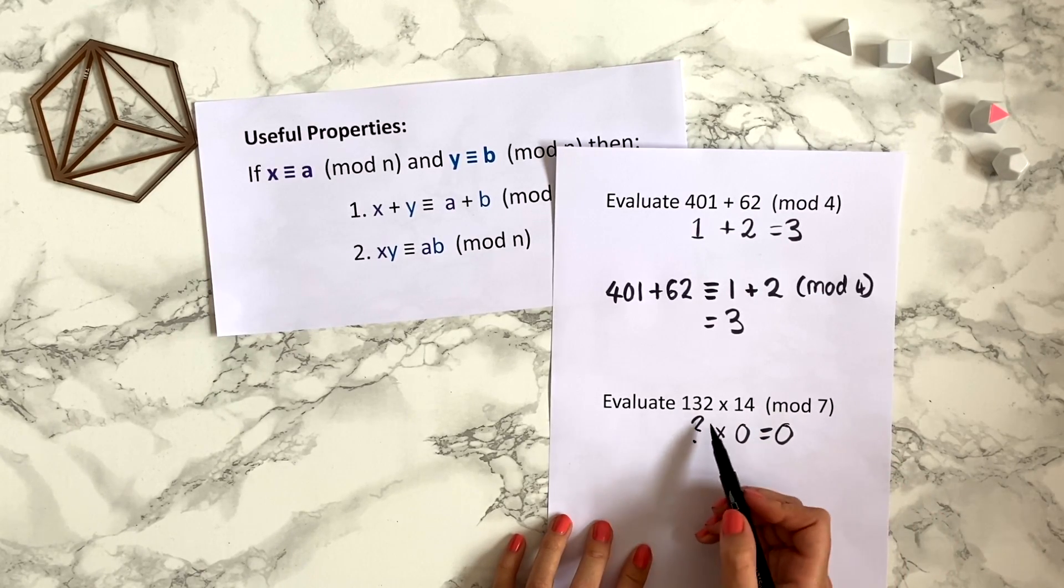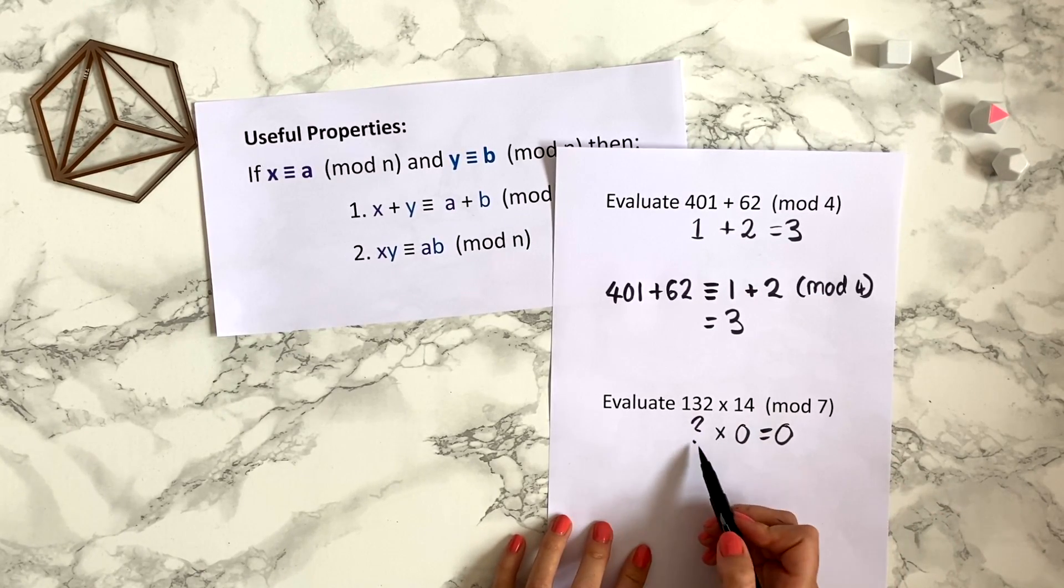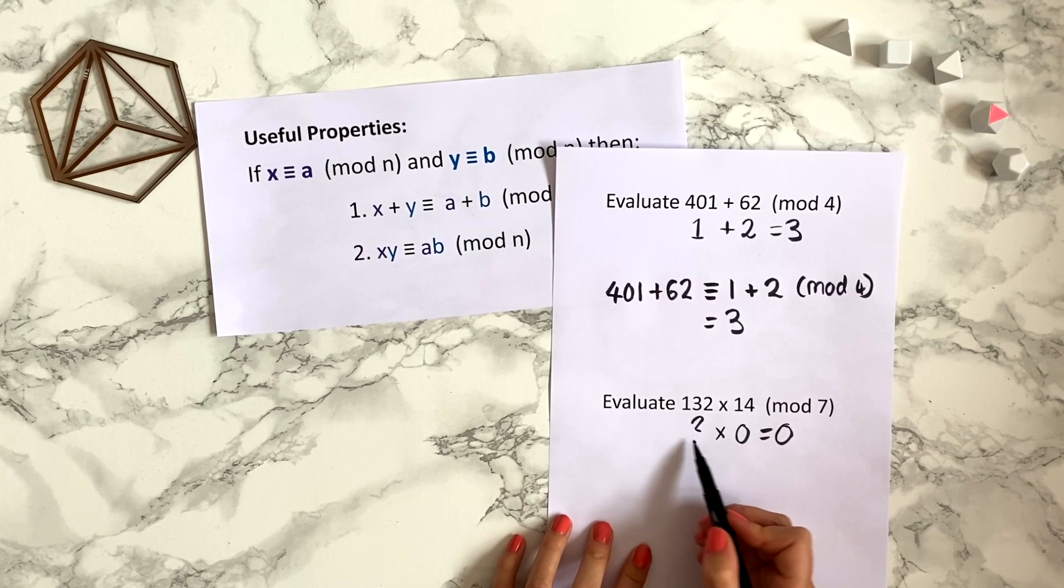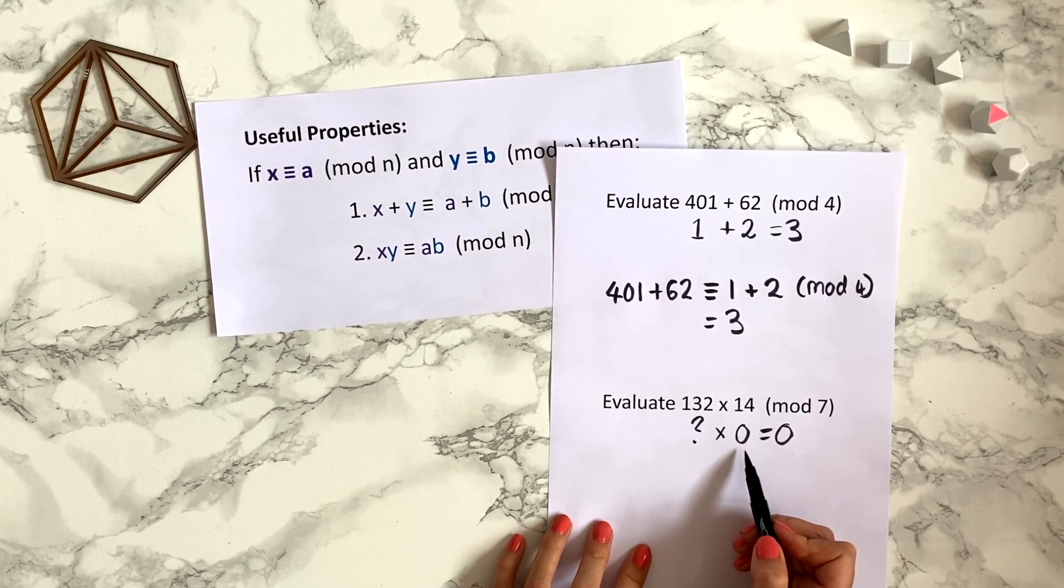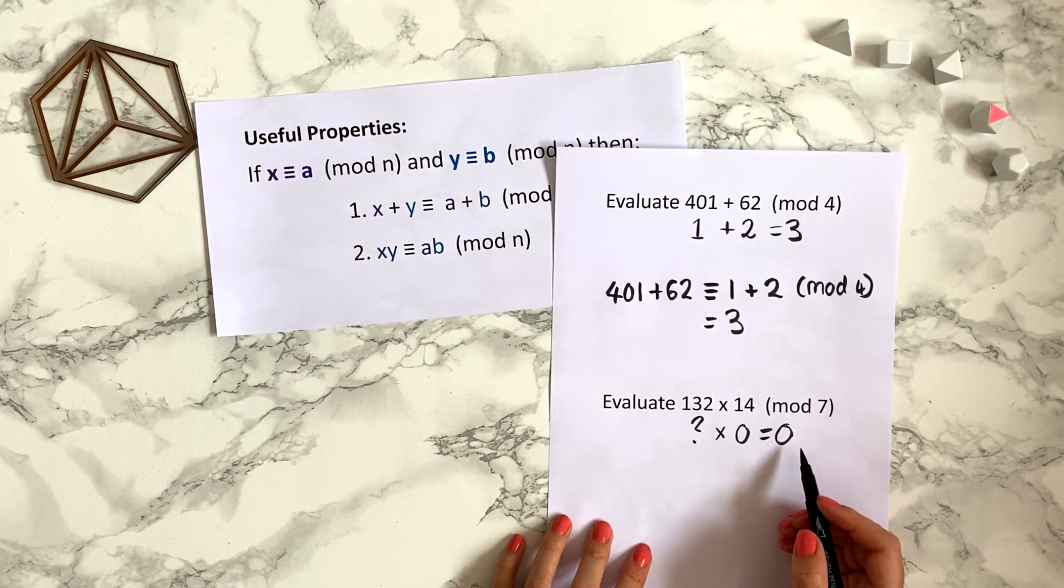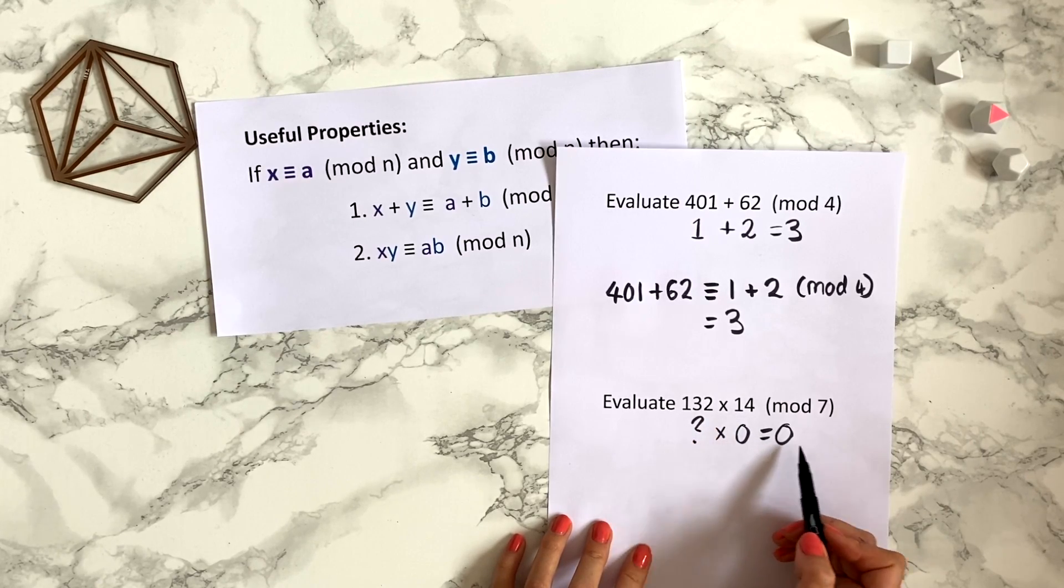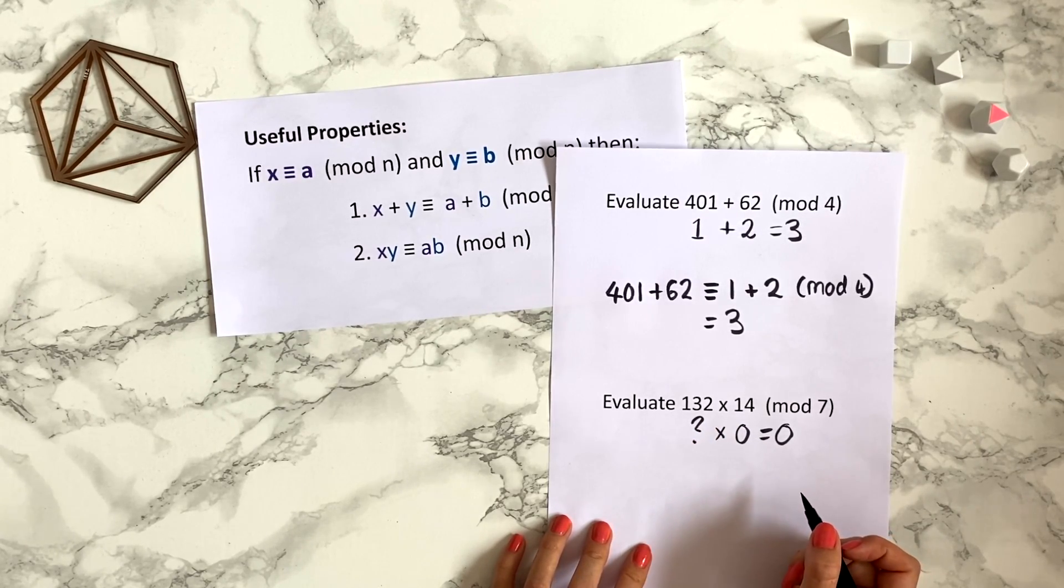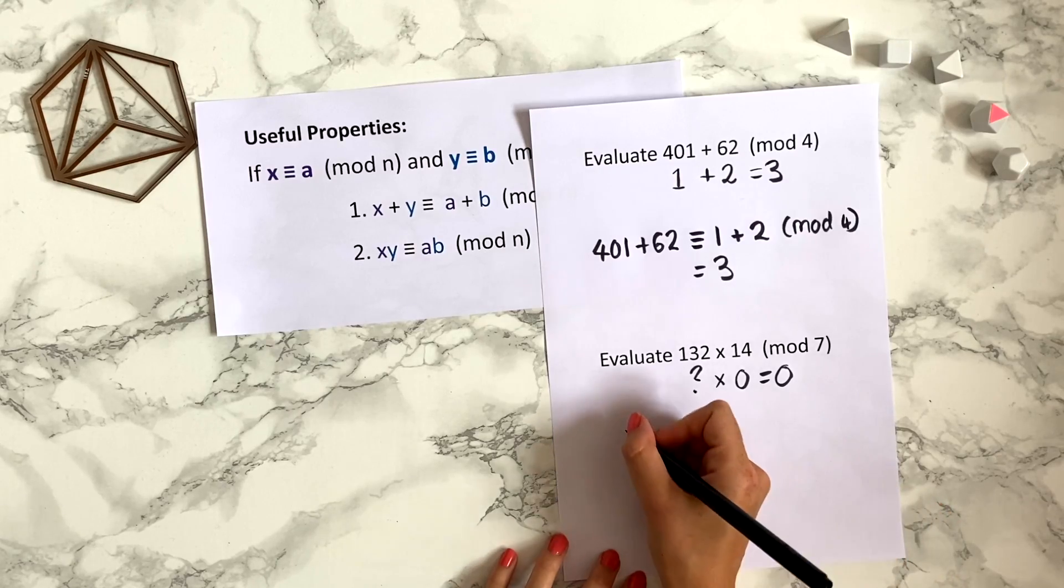and anything times by 0 will give us 0. So it doesn't actually matter what this number is modulo 7, because whatever it is we're going to times it by 0 and that's going to give us 0. So 132 × 14 is congruent to 0 mod 7, and we can write it out formally like this.